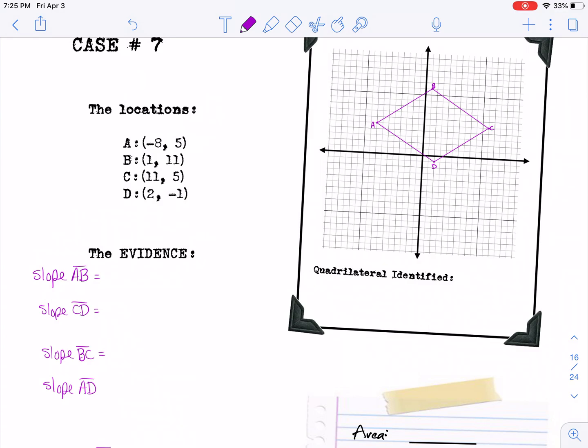For the slope of AB, you would have 5 minus 11 over negative 8 minus 1, and that gives you negative 6 over negative 9, or a positive 2/3. For the slope of CD, you would have 5 minus negative 1 over 11 minus 2, which gives you 6 over 9 and a positive 2/3 again. So then those two sides are parallel, AB is parallel to CD.